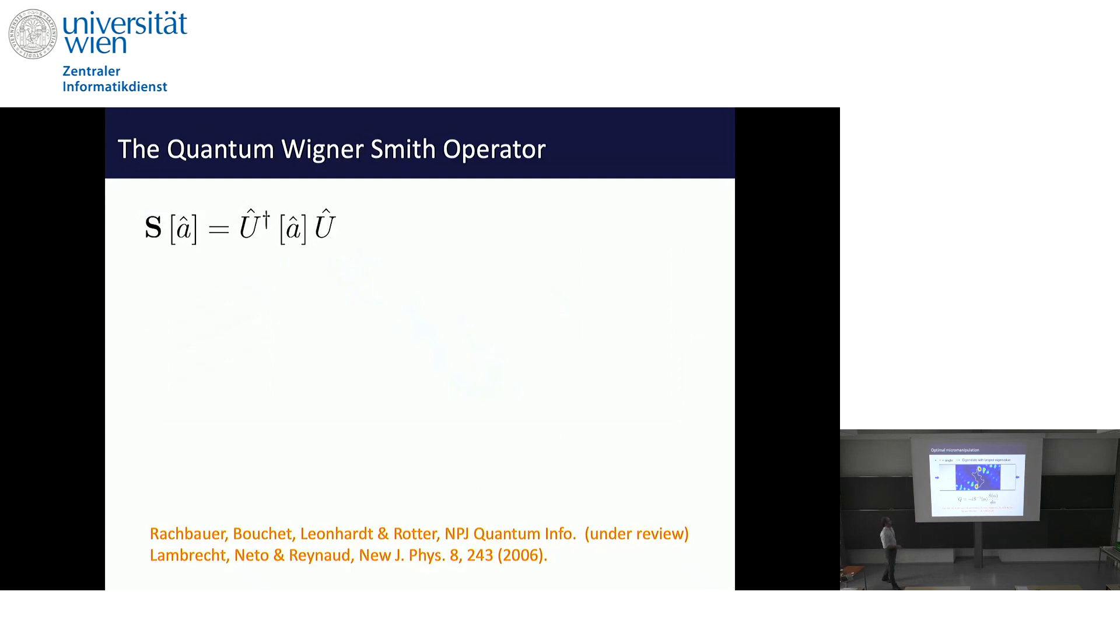Now I want to show one slide about something that was completely surprising to us, which is work that we did recently together with Lukas Rachbauer, Dorian Boucher, Ulf Leonhardt from the Weizmann, and myself. We asked the question, what happens if we do not just take classical light fields, as we did so far, but actually we quantize the light field? We assume that the light field is really a quantum electrodynamical field.